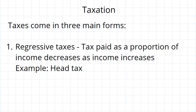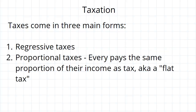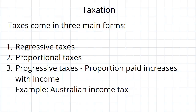After regressive taxes, we have proportional taxes, where everybody pays the same proportion. Another term for this is a flat tax — for example, a flat income tax of 10%. This is a very simple type of tax. Then the final type is progressive taxation, where the proportion of income you pay goes up as income goes up.